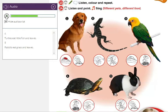4. Turtles eat little fish and leaves. 5. Rabbits eat grass and leaves.